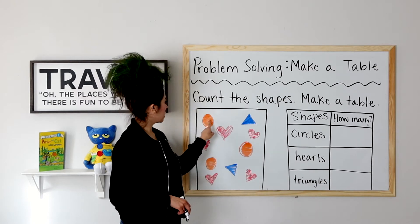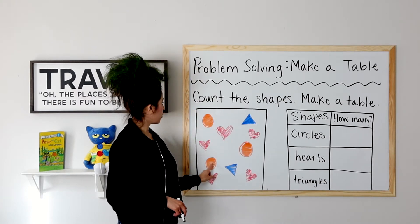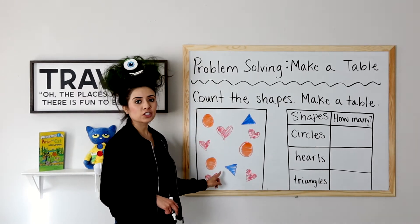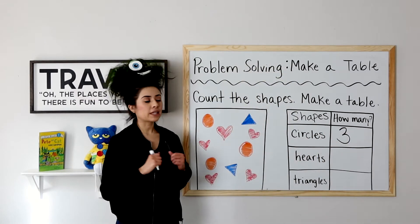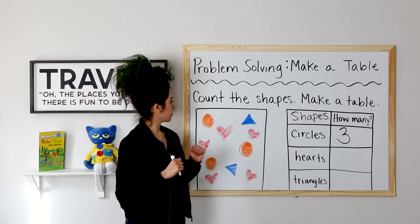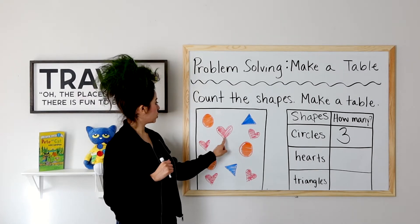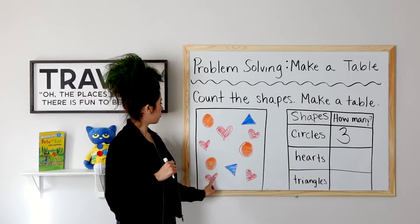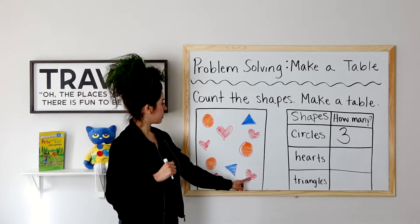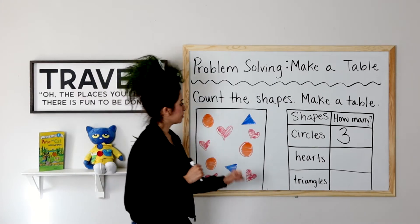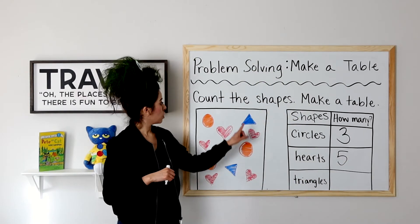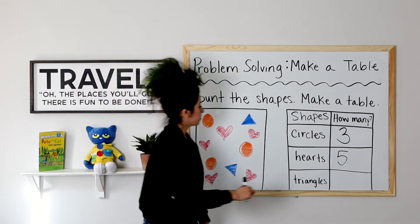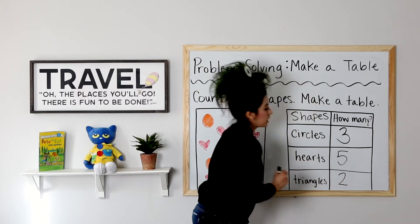Ready? One, two, three. I have three circles. How many hearts do I have? One, two, three, four, five. Five hearts. And how many triangles? One, two. Two triangles.